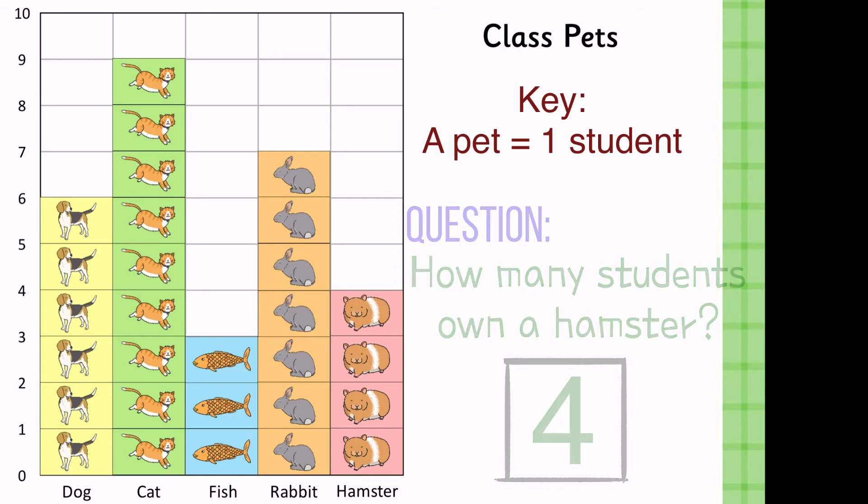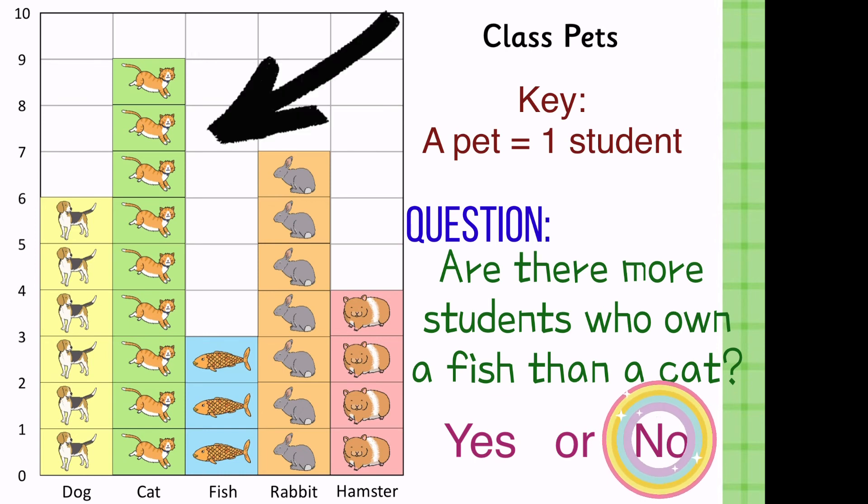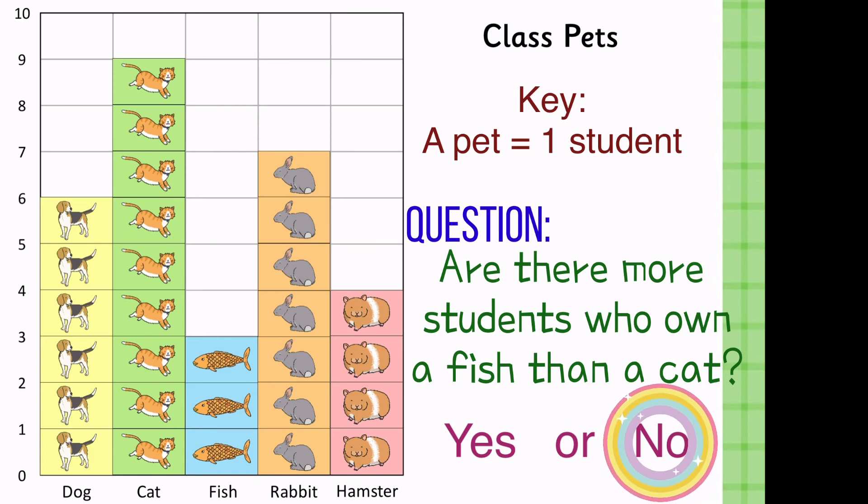Let's try another one. Are there more students who own a fish than a cat? Yes or no? So, this time we're going to compare. Look at the fish data and look at the cat data. What is the answer? The correct answer is no. Why? Because if you're going to look at the data, you would realize that there are more students who own a cat than a fish.